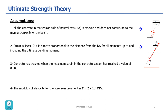The third assumption is that concrete has crushed when the maximum strain in the concrete section has reached the value of 0.003. So we are basically talking about this strain. And the modulus of elasticity of the steel reinforcement is 2 times 10 to the power of 5 MPa.